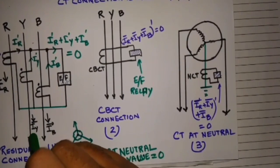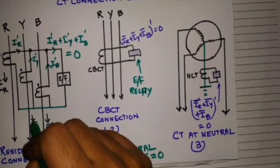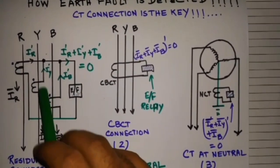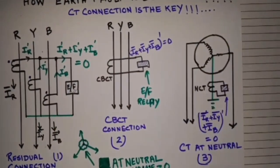If there is a two-phase to ground fault, suppose these two phases have faulted and connected to ground, then IR and IY will have value and IB will be zero, but their summation will not be zero. So in that case the relay will also pick up.